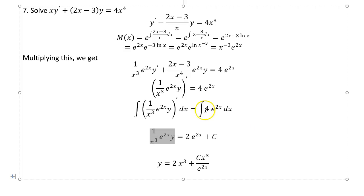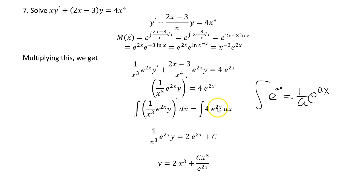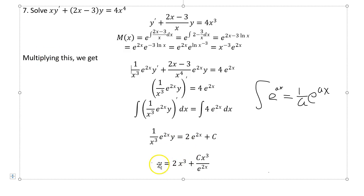The only thing left is the right-side integral. Using the formula that the integral of e^(ax) is (1/a)e^(ax), the integral of 4e^(2x) gives 2e^(2x). Solving for y gives the final answer.